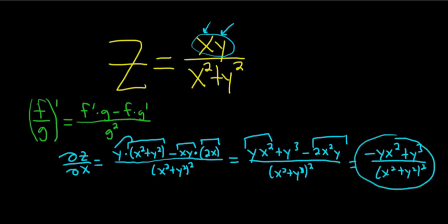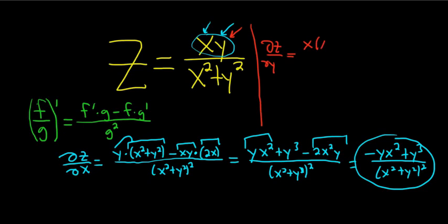Let's do the partial with respect to y — ∂z/∂y. Now all of the x's are constants, so we're taking the partial with respect to y and all of the x's are constants. The derivative of the top piece: the derivative of y is 1, so we just get x because it hangs out, times the bottom, x squared plus y squared, minus the top, xy, times the derivative of the bottom. The derivative of x squared will be 0, so we just get 2y. All over the bottom squared: x squared plus y squared, squared.